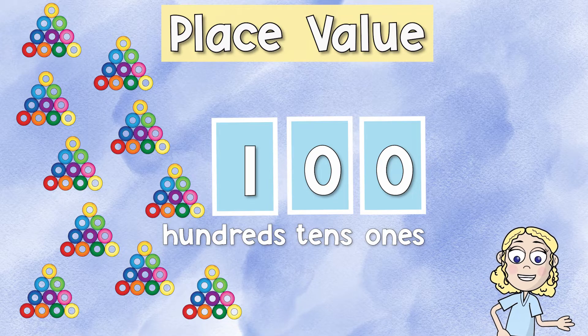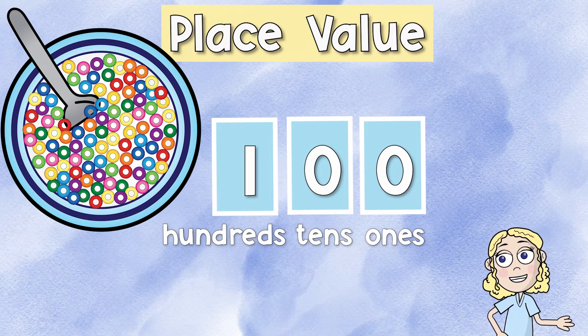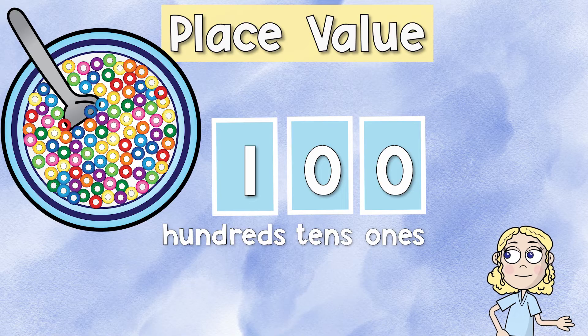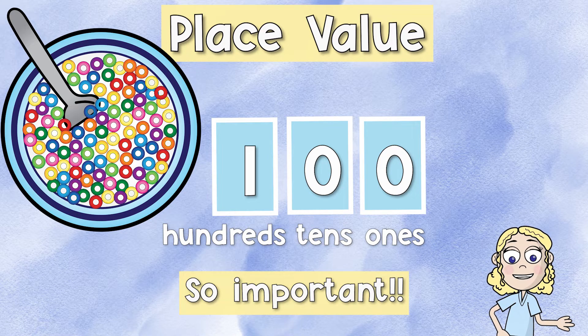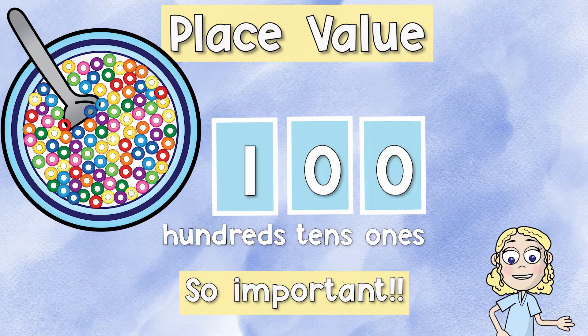So now we have one group of 100 or one giant bowl of cereal. That's why place value is so important. It allows us to see how many groups of each place value.